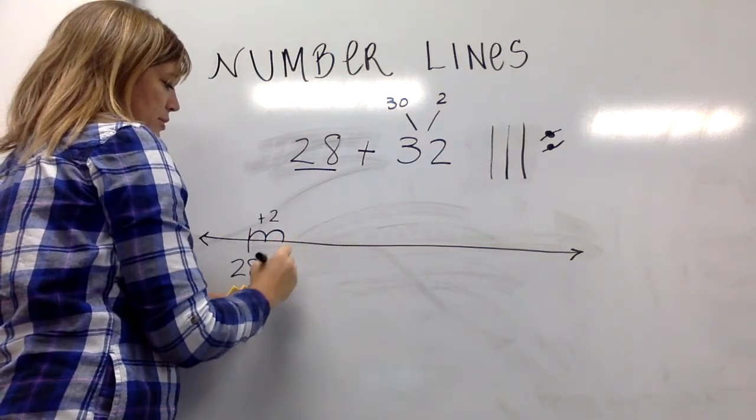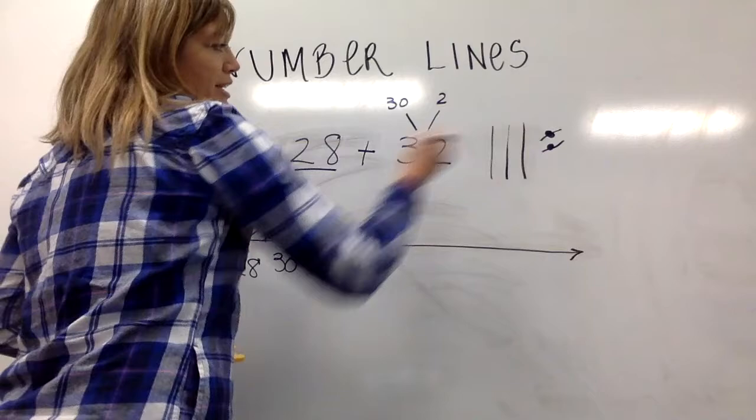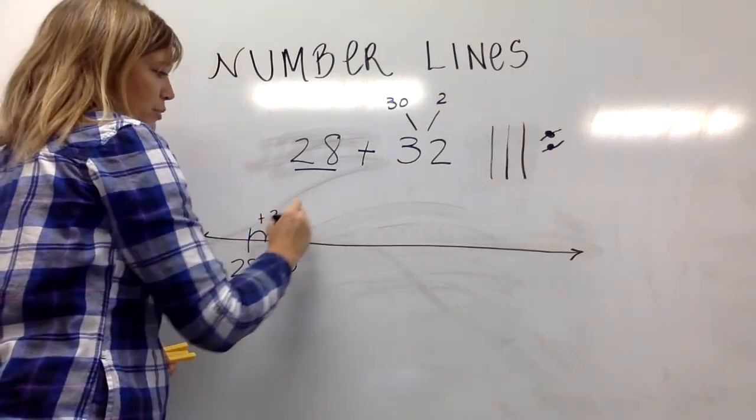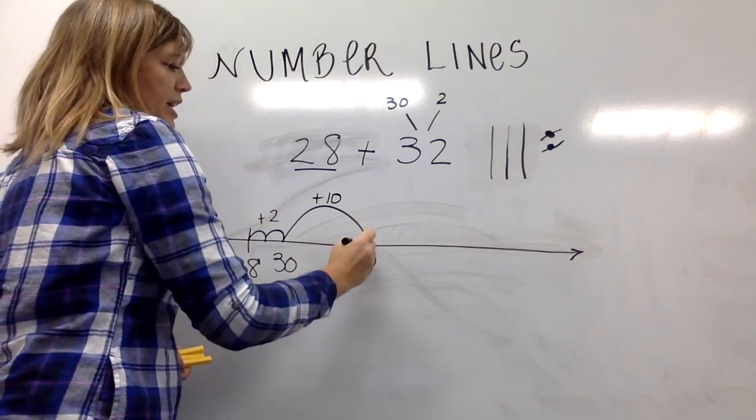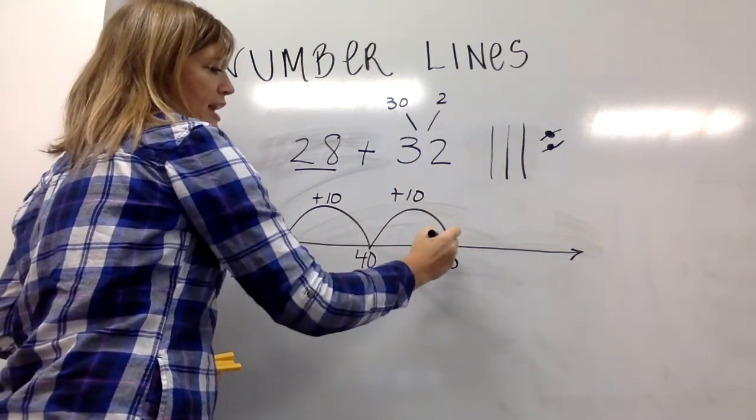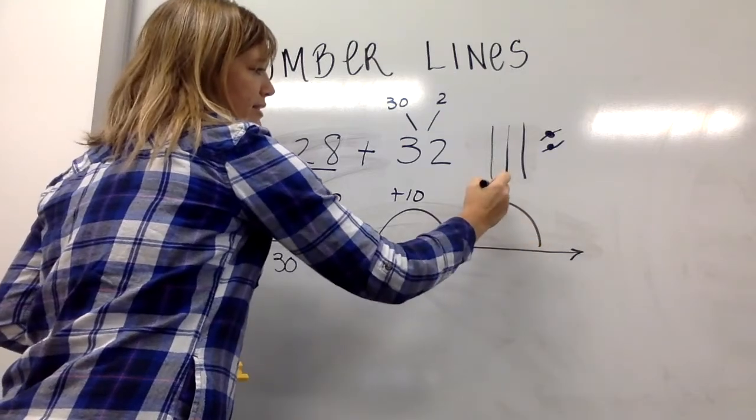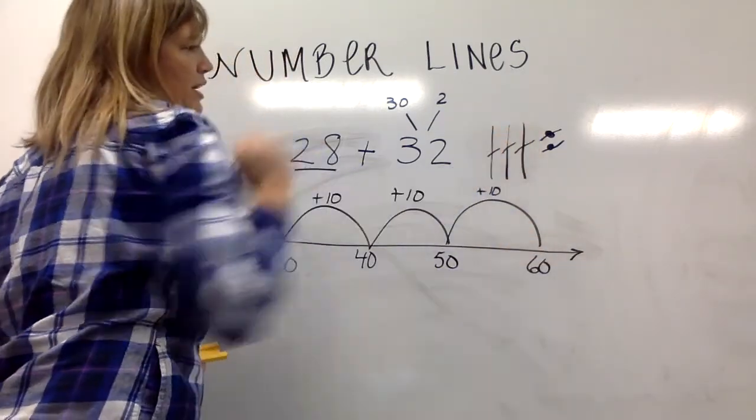When I added my 2, I made it to 30. What do I have left to add? I have 3 tens left to add. One jump of 10 gets me to 40. Another jump of 10 gets me to 50, and a third jump of 10 gets me to 60. Three jumps of 10.